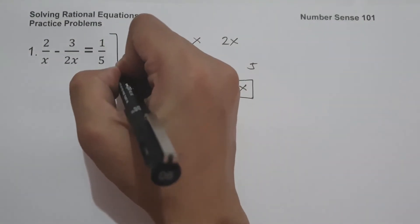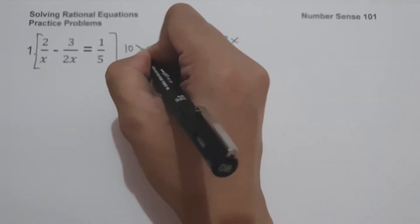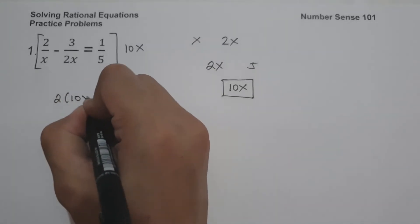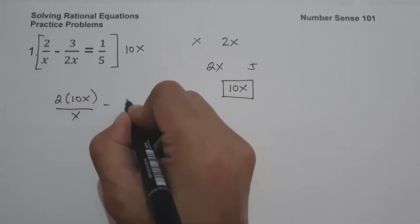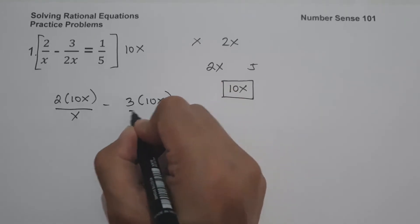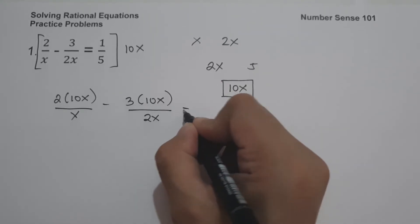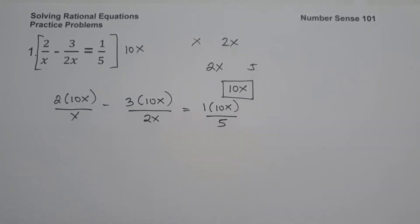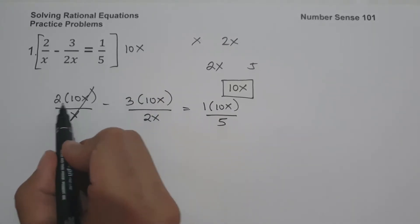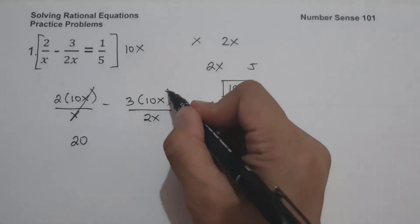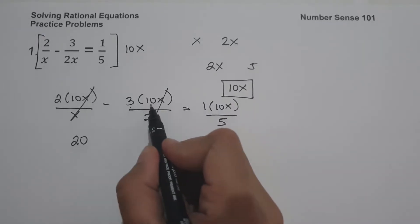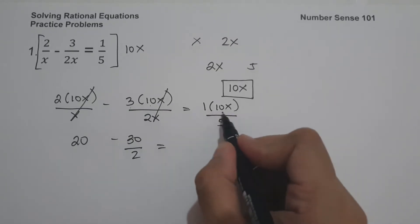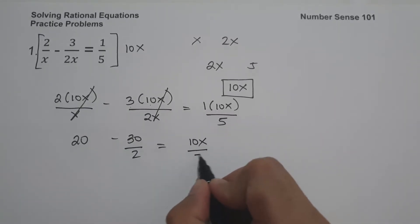So let us multiply the whole equation by the LCM, which is 10x. We have 2 multiplied by 10x over x, minus 3 times 10x over 2x, equals 1 times 10x over 5. We can cancel x to get 2 multiplied by 10, that is 20. Negative 3 times 10 is negative 30, divided by 2, and 1 multiplied by 10x is 10x over 5.